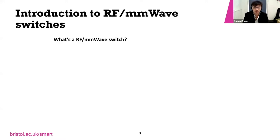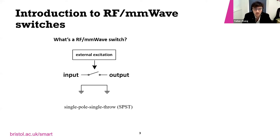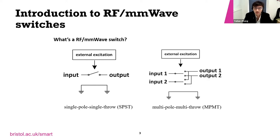So first, what is an RF or millimeter wave switch? The simplest configuration is a single pole single throw switch, which is simply a two-port linear RF network that can either let the signal through or block it by switching on or off an external excitation. If we extend this further, we can build a multi-throw switch by combining several single-pole single-throw switches — here we have a two-pole four-throw switch for more complicated applications.